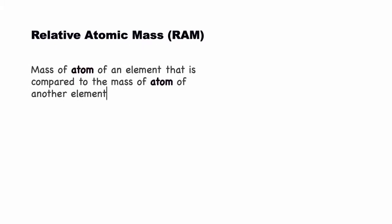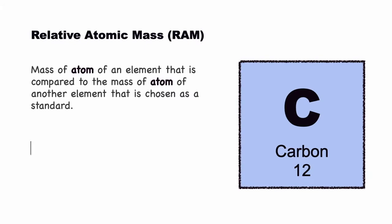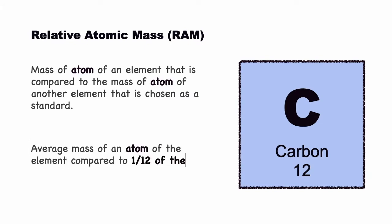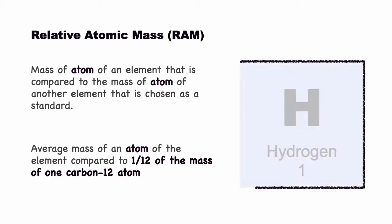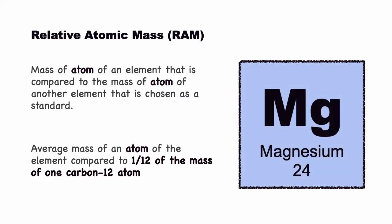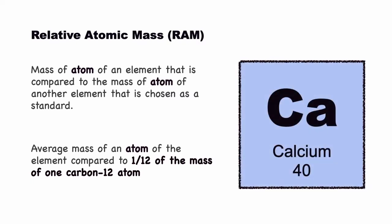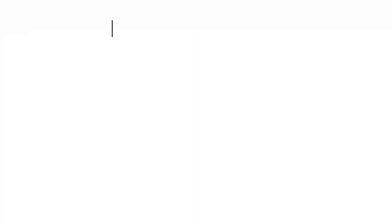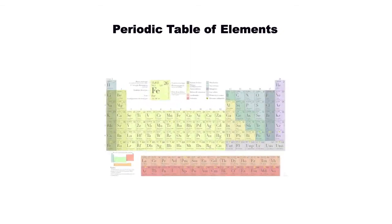Here we go! We start with relative atomic mass, R-A-M. The mass of an atom is compared to another atom that is chosen to be a standard. Scientists agree to use carbon-12 as a standard. The average mass of an atom is compared to 1/12 of the mass of one carbon-12 atom. For example, relative atomic mass for hydrogen is 1, oxygen is 16, fluorine is 19, magnesium is 24, and calcium is 40. You can find all these relative atomic mass values in the periodic table of elements.